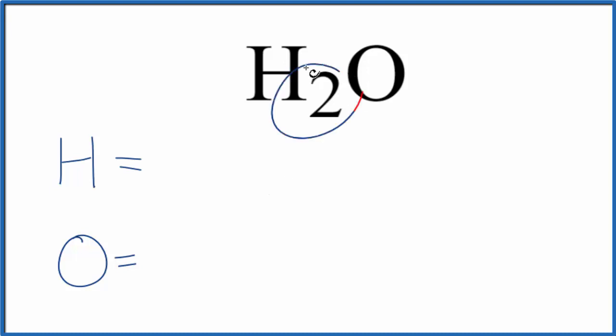So we have hydrogen, a two for the hydrogen, and it's not written here but there's a one here. So one oxygen. So we have a total of two plus one, three atoms for the H₂O molecule.